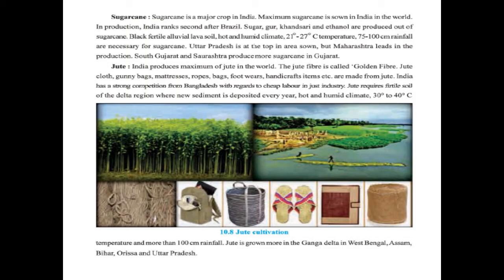Another cash crop is sugarcane. Sugarcane is a major crop in India, which has maximum area under sugarcane in the world. In production, India ranks second after Brazil. Sugar, jaggery, khandsari, and ethanol are produced from sugarcane. Black, alluvial, and lava soil, hot and humid climate, temperature of 21 to 27 degree Celsius, and 75 to 100 cm of rainfall are necessary. Uttar Pradesh is at the top in area sown but Maharashtra leads in production. South Gujarat and Saurashtra produce more sugarcane in Gujarat.